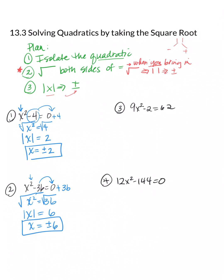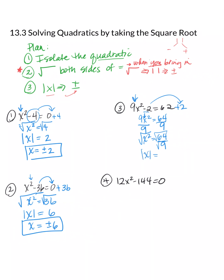Now let's up the complexity. Number three: 9x squared minus 2 equals 62. Isolate the quadratic term — add 2 to get 9x squared equals 64, then divide by 9, giving x squared equals 64/9. Take the square root; since it's an even index, put absolute value bars. Square root of 64 is 8 and square root of 9 is 3, giving absolute value of x equals 8/3. Drop the absolute value bars using plus or minus, so x equals plus or minus 8/3.